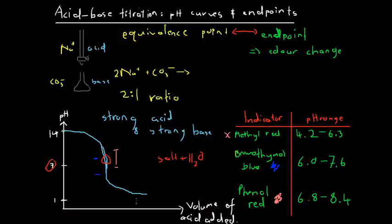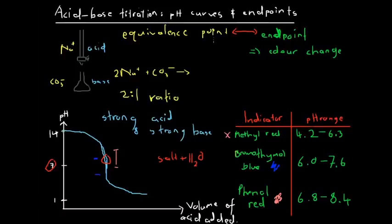Because the pH changes sharply around 7 — adding one drop to reach pH 7 and another drop to go down to about pH 4 — both bromothymol blue and phenol red are going to change colour very quickly and very close to the equivalence point. For that reason, either of these would be appropriate for the titration of a strong acid and a strong base.